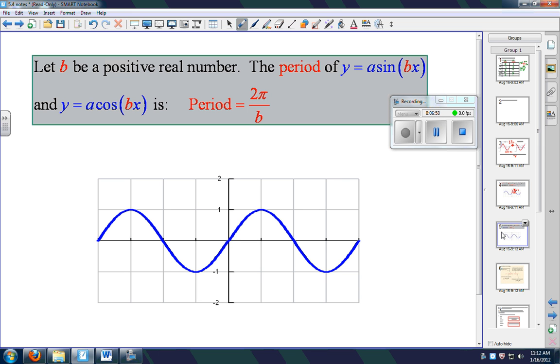This b, okay, it's got to be a positive real number. So we talked about what the period of each of these guys is, 2π. Now if we start transforming these and changing that b value around, we got to use this thing right here. Okay, period is 2π over b.